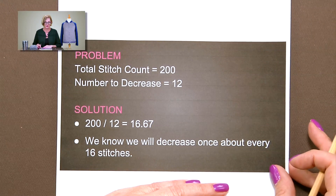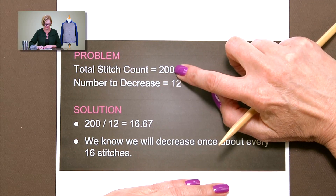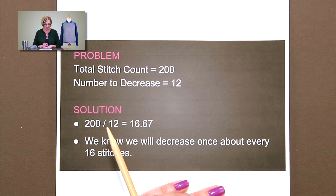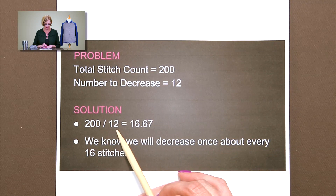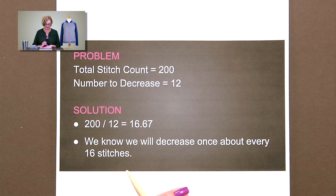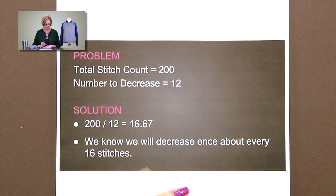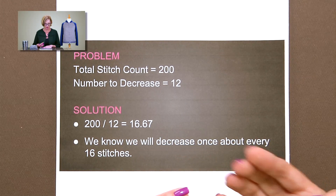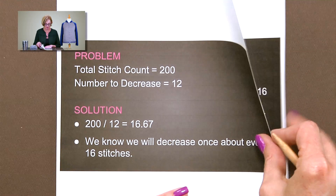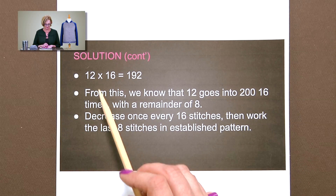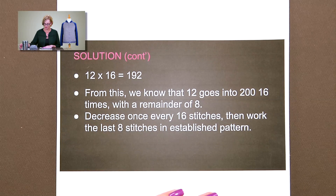Let's take a look at the math. In this case we're going to set the number of stitches we have at 200 and the number to decrease at 12. The first thing we do is divide 200 by 12 — take this total stitch count and divide it by the number to decrease. We get kind of a messy number, but it does tell us that we'll decrease once about every 16 stitches. In this case we're assuming it's going to be decreasing in stockinette, so we want to get the decreases even enough. It doesn't have to be completely perfect.